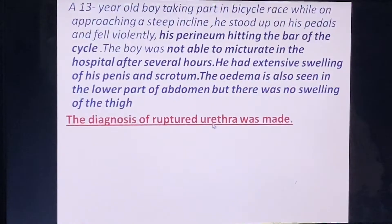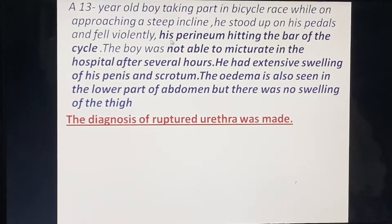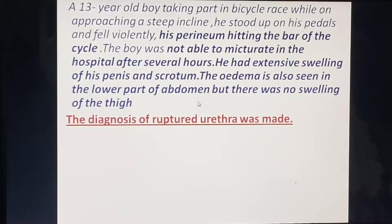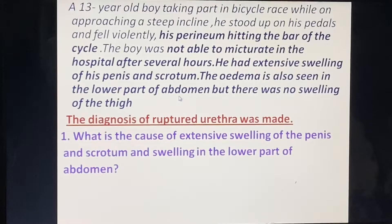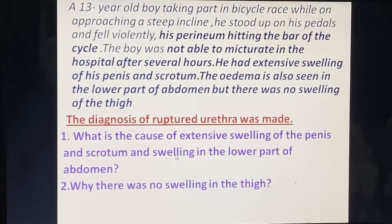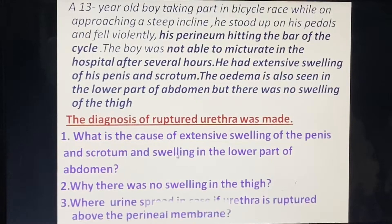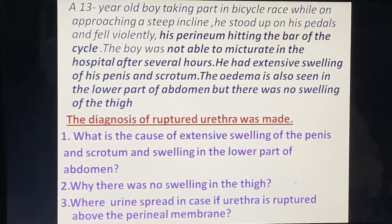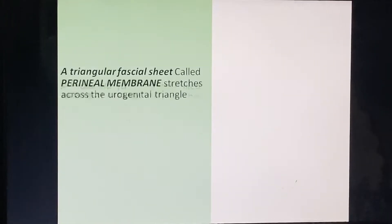Before discussing the superficial and deep perineal pouches, a clinical case of ruptured urethra is introduced. The key anatomical questions are: What causes extensive swelling of the penis, scrotum, and lower abdomen? Why is there no swelling in the thigh? And where does urine spread if the urethra is ruptured above the perineal membrane? These queries will be answered through discussion of the topic.